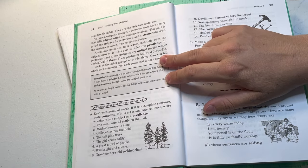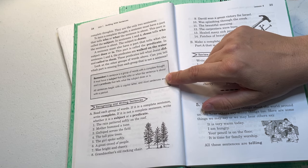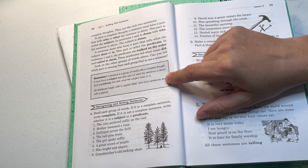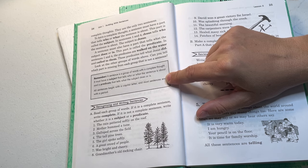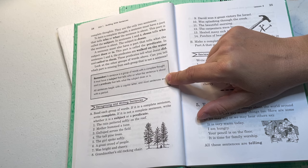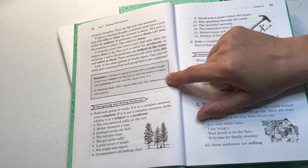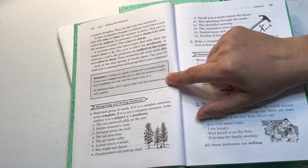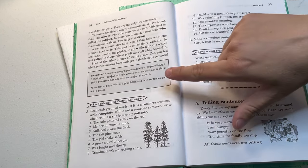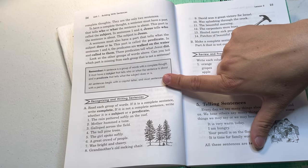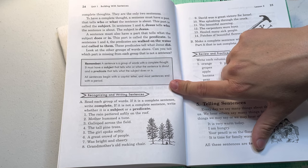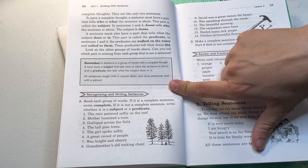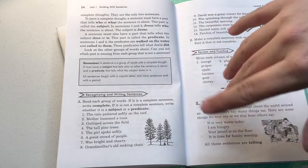Every sentence must have a complete thought. In the group of words above, only numbers one and four have complete thoughts. They are the only two sentences. To have a complete thought, a sentence must have a part that tells who or what the sentence is about. The part is called the subject. In sentences one and four, Jesus tells who the sentence is about. The subject is Jesus. A sentence must also have a part that tells what the subject does or is. This part is called the predicate. In sentences one and four, the predicates are walked on the water and called to them. These predicates tell what Jesus did. Remember, a sentence is a group of words with a complete thought. It must have a subject that tells who or what the sentence is about. And a predicate that tells what the subject does or is. All sentences begin with a capital letter and must end with a period. So this is definitely a review because they already talk about this in grade two.